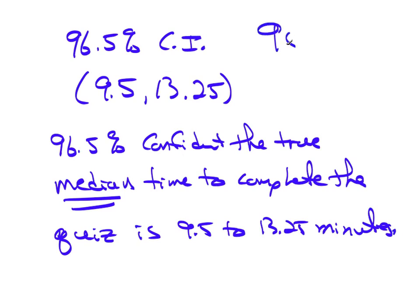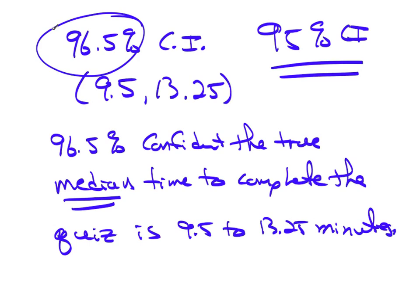We wanted a 95% confidence interval. But because of the discreteness, the fact that we're using a binomial to calculate these tail probabilities for the confidence interval, it's very discrete. We can't get exactly 95%, but we were able to get pretty close to it.